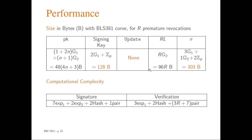Regarding concrete sizes, implementing our scheme with the BLS-381 curve leads to a signing key of only 128 bytes. One of the main advantages is that there is no update information — users do not have to retrieve anything when a new time period begins. Group signatures are very short, consisting of roughly 300 bytes. The signature complexity is constant, requiring only a few exponentiations, and verification can be performed quite efficiently as long as the number of premature revocations is not too large.